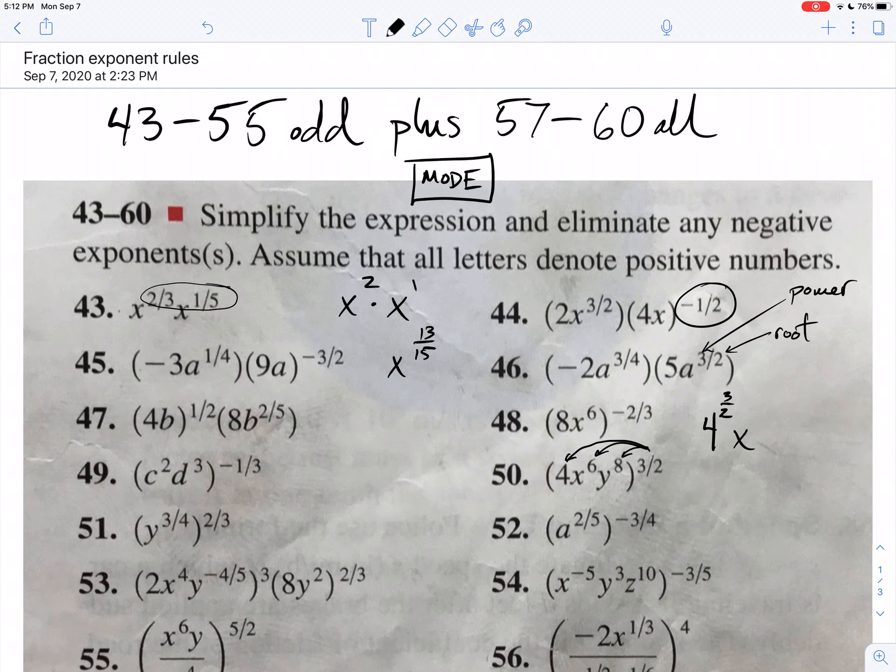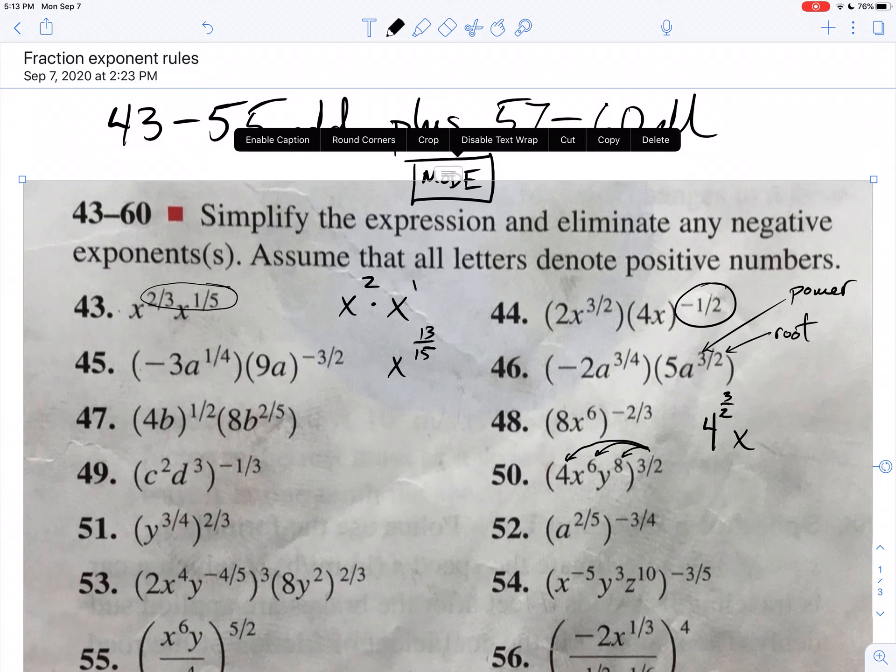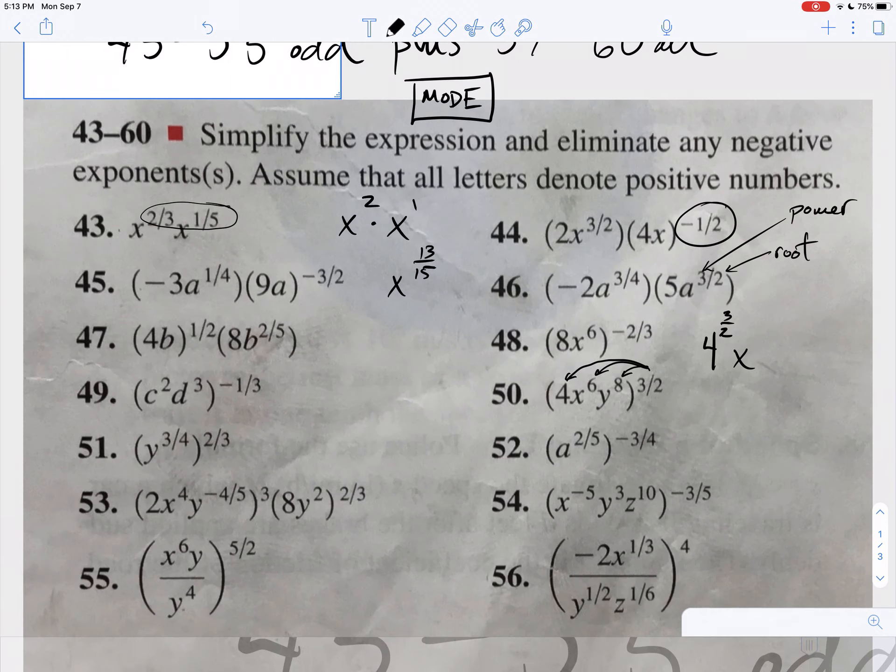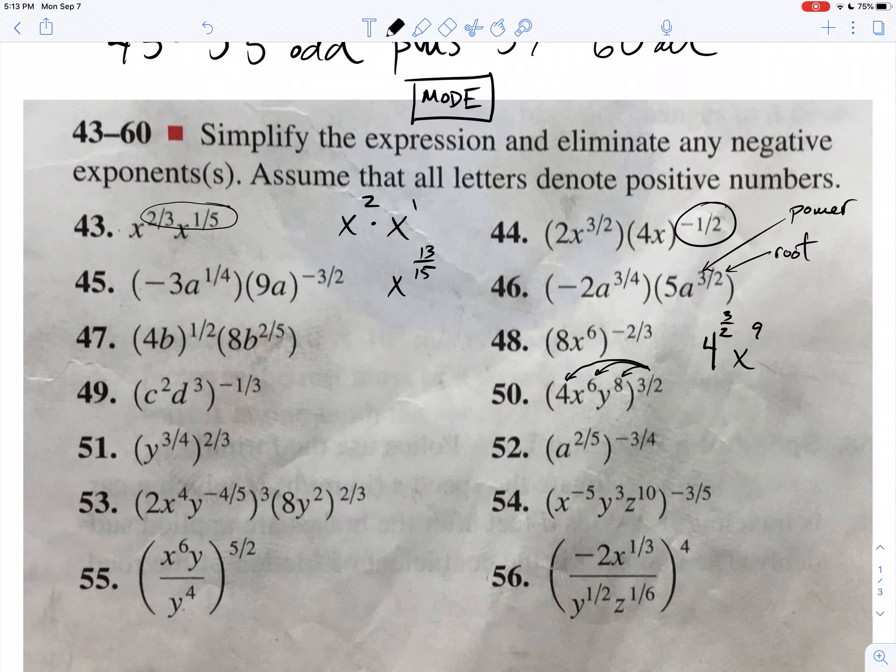It's not going to be, it's going to be x to the 6th times 3 halves. So, you can double check me, but if I do that, I get x to the 9th. And then, 8 times 3 halves, that's just 12. I can do that on a calculator, too.